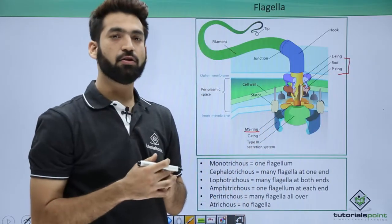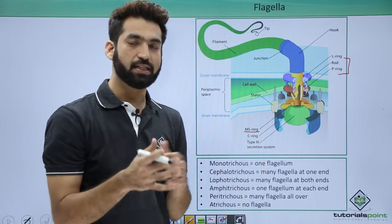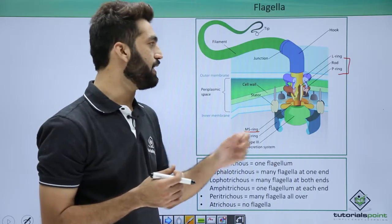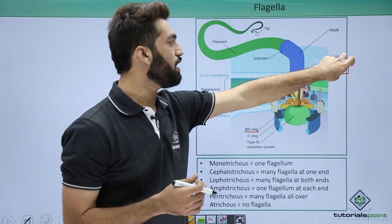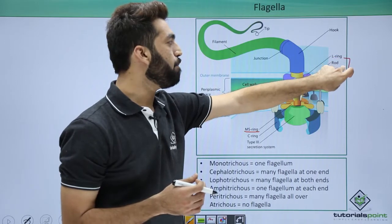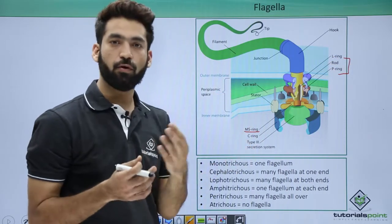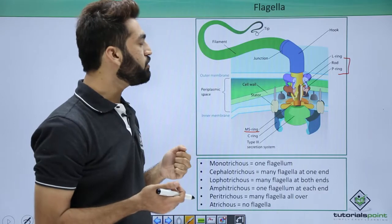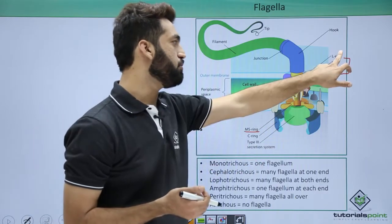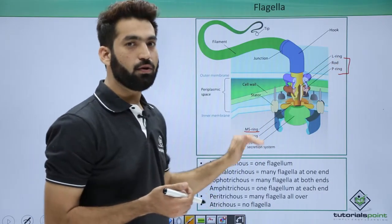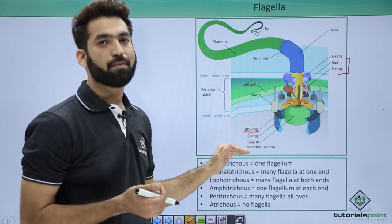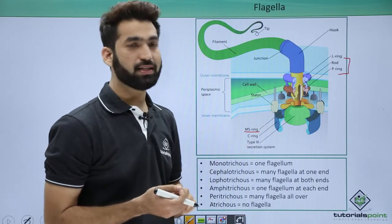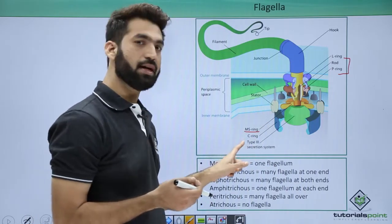When we talk about gram staining, in gram negative bacteria there are four rings present: L, P, S, and M. But in gram positive bacteria, you don't have L and P rings — only MS rings are present. So gram positive bacteria will have one pair of rings while gram negative bacteria will have two pairs of rings.